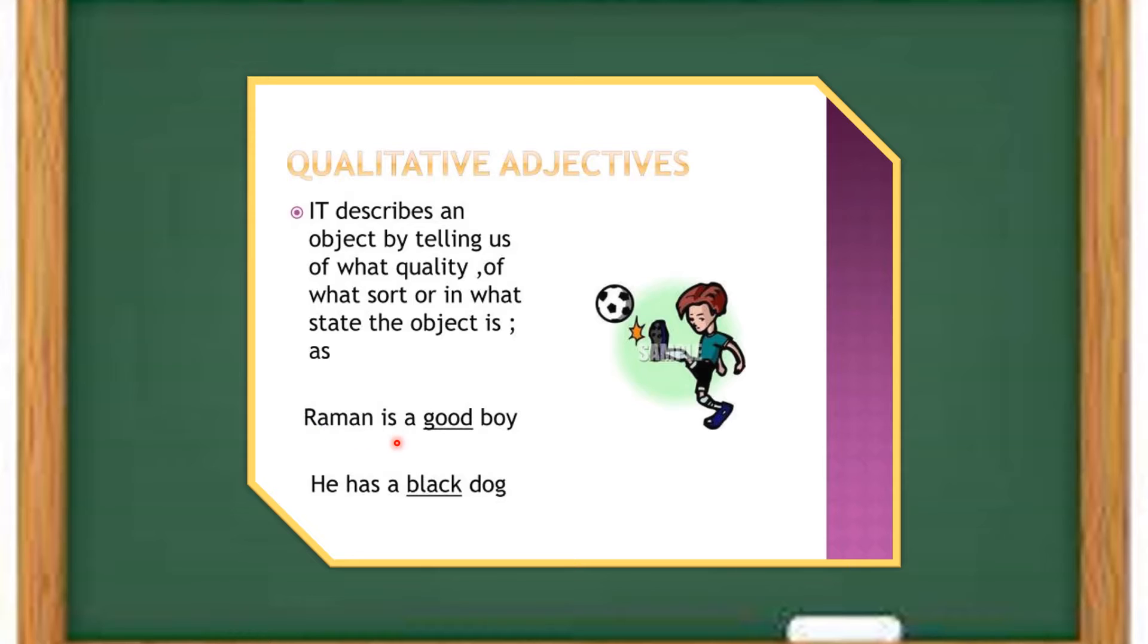For example, Raman is a good boy. Here, good is a state of the boy or a quality of a boy. And he has a black dog. This states what is the sort and what is the color of the dog. This is an example of qualitative adjective.